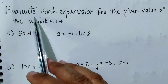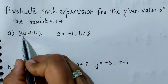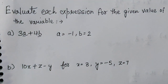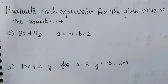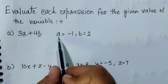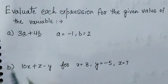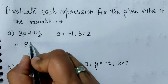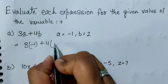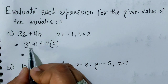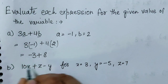The first question is: evaluate each expression for the given values of the variables. Here a and b are the variables. The value of a is minus 1 and b is 2. We evaluate our answer — in the first step we do 3 times a in bracket, then 4 into b. We multiply 3 by 1, so minus 3, plus 4 into 2.